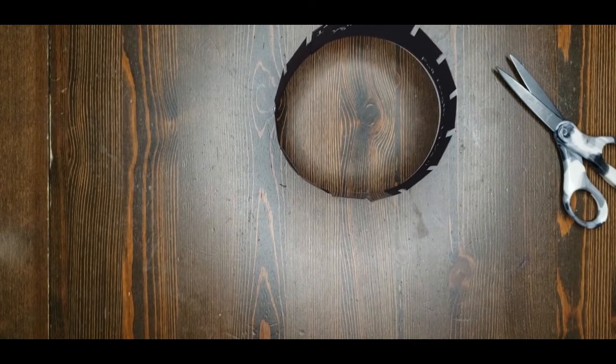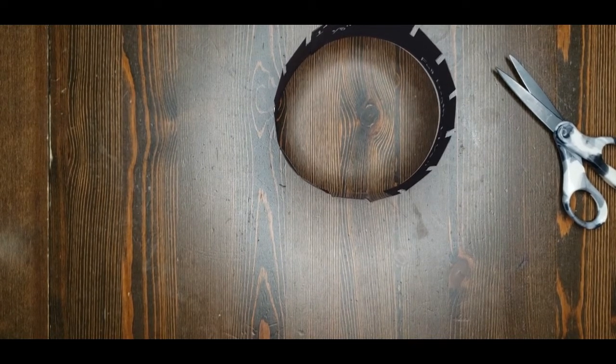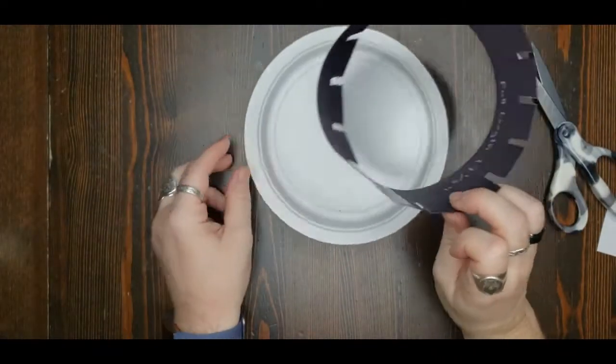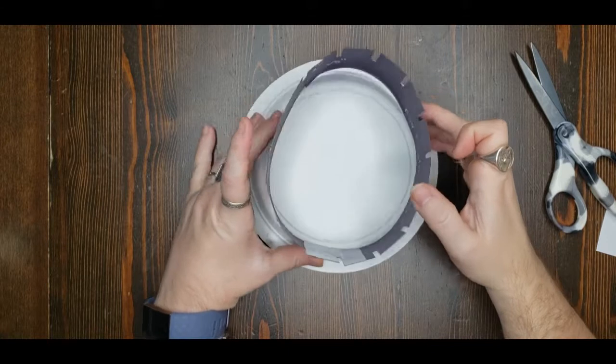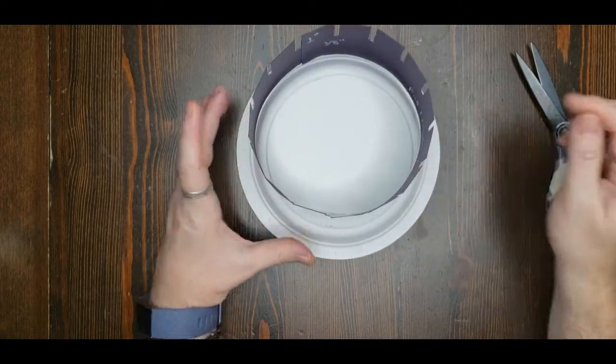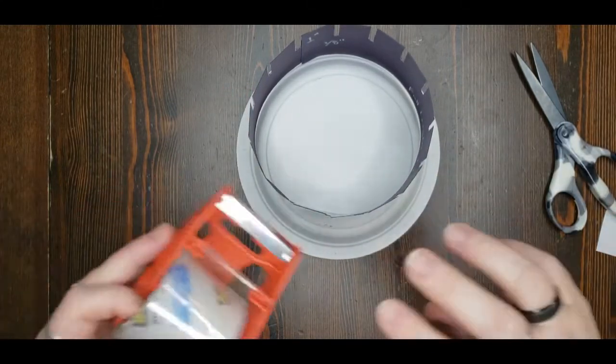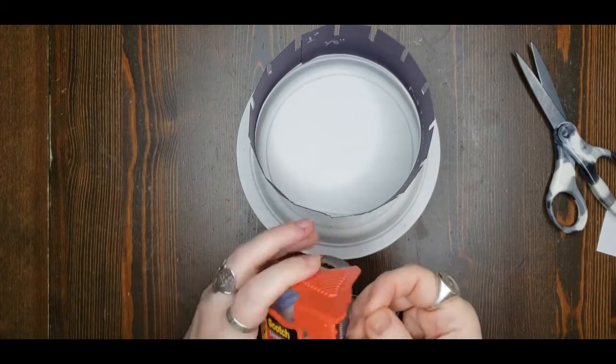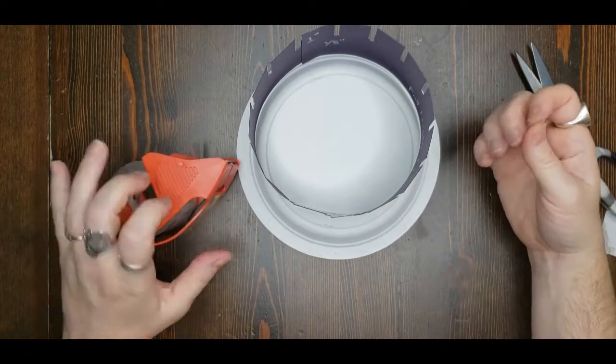Once our circle is made, then we're going to grab our platform. For me, that was a nine inch birthday plate, a paper plate that we didn't use at our last birthday. You can use a pie tin or whatever is circular.